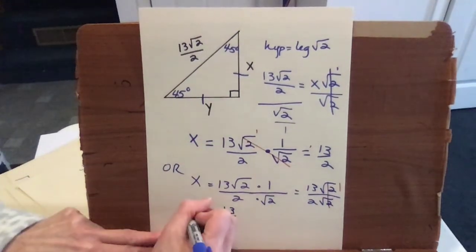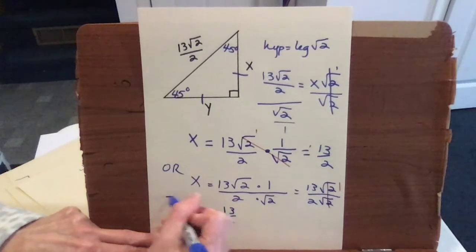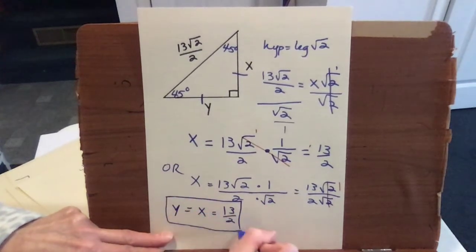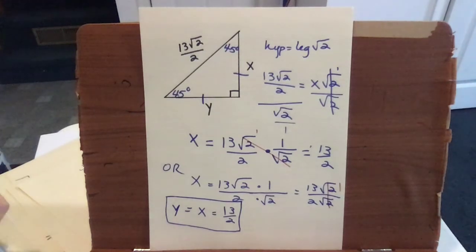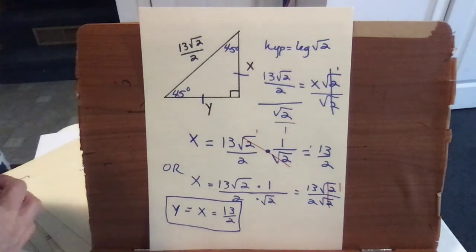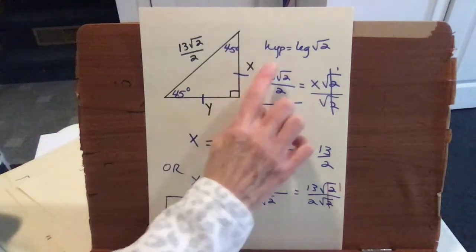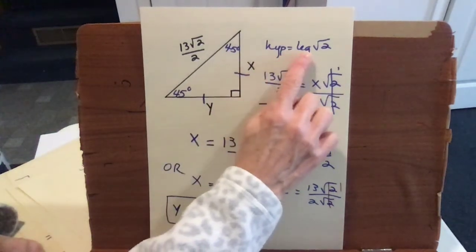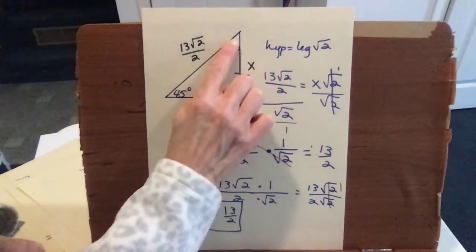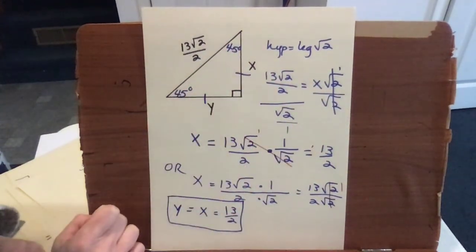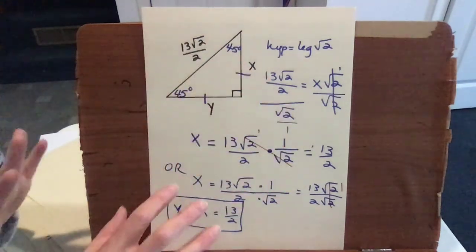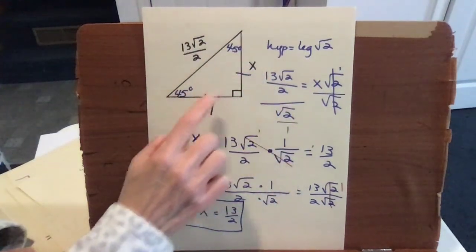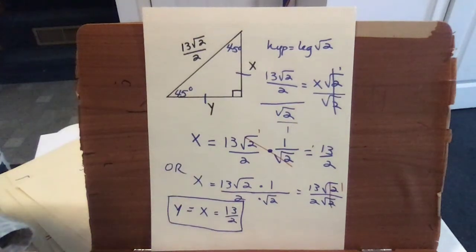Since X is the same as Y, Y also equals 13 over 2. If you wanted to write that as 6 and a half, that's fine, but fractions are fine as long as they're in reduced form. Following the rule that hypotenuse equals a leg times root 2 for 45-45-90 right triangles, you can solve any of these problems for any side, whether it's a leg or the hypotenuse.